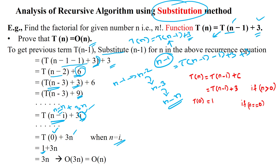Then you get T(0) consuming 1 unit of time, and here this is the 3n. So as per the order of growth, we can ignore the constant value and the coefficient value of the higher order. Finally, big O of n. This is the way to apply the substitution method to find out the time complexity of a given recurrence relation function.